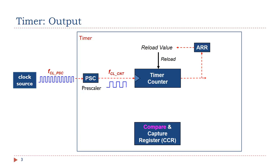When a timer is configured to generate an output signal, hardware constantly compares the free-running counter with a value stored in a special register called the compare and capture register (CCR). The output of the timer can be high or low depending on the timer settings. The CCR register has two usages: compare and capture. When a timer is used to generate output, the CCR register is used only for compare.